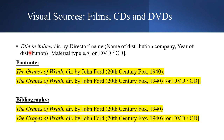For visual materials such as films, the formula is: Title in Italics, directed by [Director], Studio, Year. For example: The Grapes of Wrath, directed by John Ford, 20th Century Fox, 1940. If you watched it on DVD or CD, add 'on DVD' or 'on CD' at the end. In the bibliography, the same details are used without a full stop at the end.